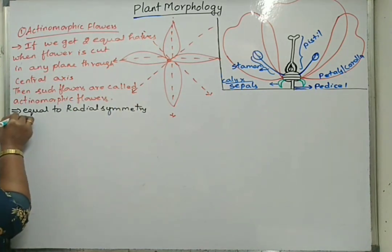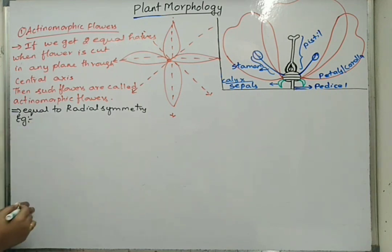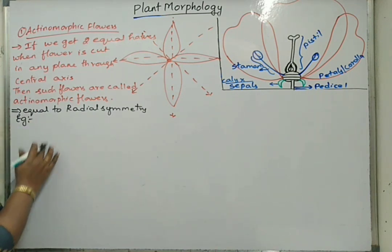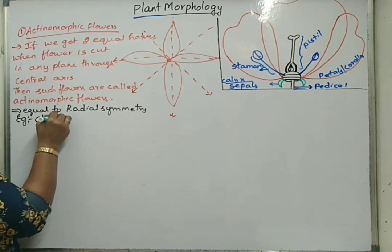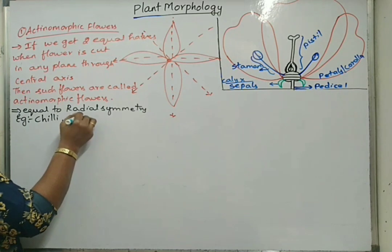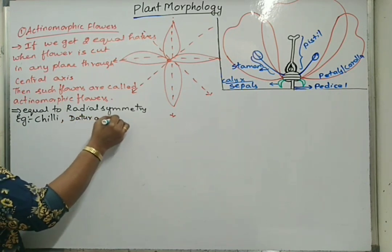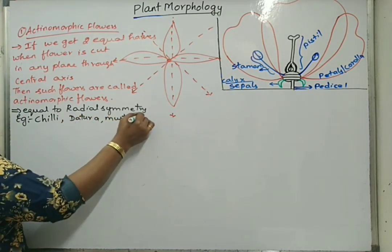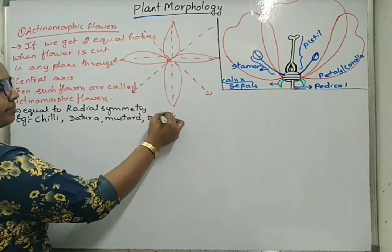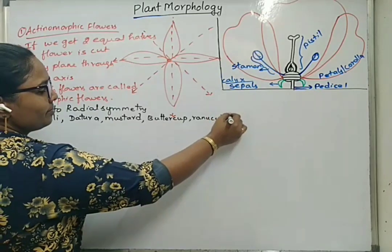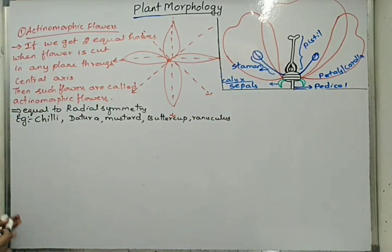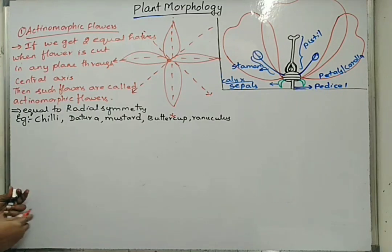Examples of flowers that show actinomorphic or radial type of symmetry are chillies, datura, mustard, buttercups, and ranunculus. These are a few examples that are studied under actinomorphic type of flowers.